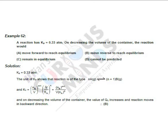Hello everyone, let's see our next example which is Example number 62. Our reaction has Kp = 0.33 atm. On decreasing the volume of the container, the reaction would be, and we are saying that if I decrease the volume of the container then what will happen?